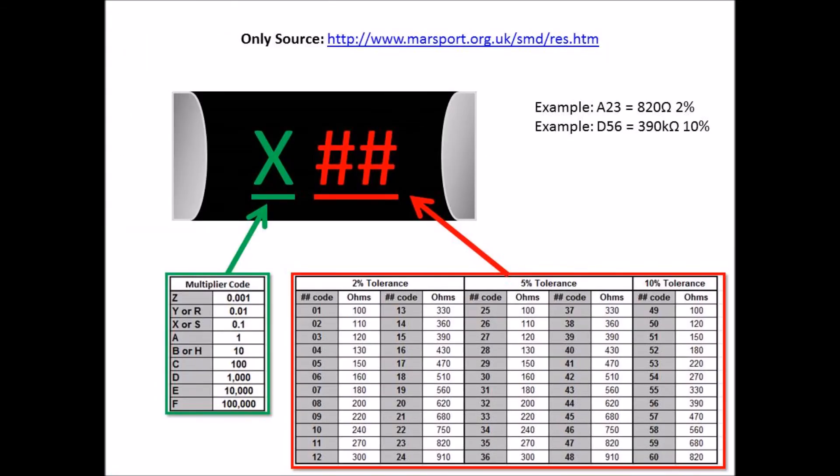I found another website that showed a different letter and number combination. So the first letter would be the multiplier, and then the two numbers after that equaled the cross-reference to another value and also showed what tolerance it was. So the example I give is A23. So A is the multiplier of 1, 23 is the code for 820, so 820 times 1 equals 820 ohms.